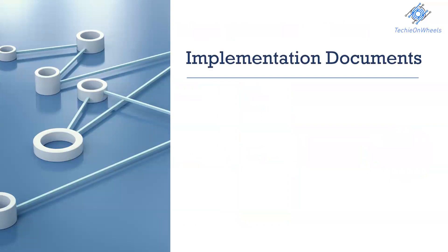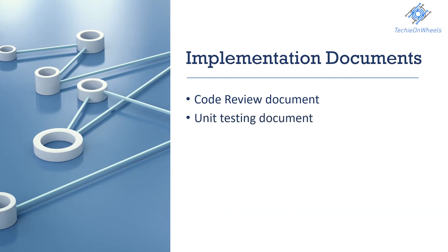Moving on to implementation documents — the implementation phase is not only about coding and testing but should also be well documented. The documents involved include: the code review document, maintained by the solution architect and developer to ensure coding best practices are followed; the unit testing document, maintained by the developer capturing modular test results and bugs; and the UAT tracker, which captures the UAT test scenarios and how the bot performed against those scenarios.